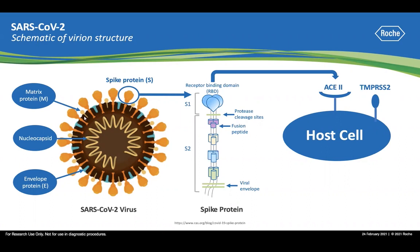The other structural proteins embedded in the lipid envelope are the matrix protein, which is the most abundant type, as well as the envelope protein. Both the matrix protein and the envelope protein play a critical role in viral particle assembly at this stage of the viral life cycle.